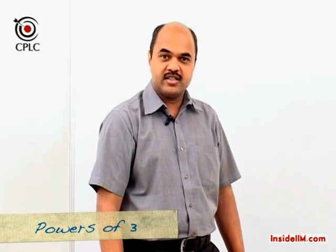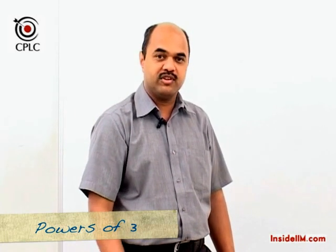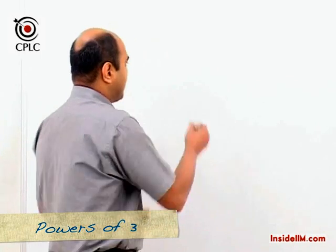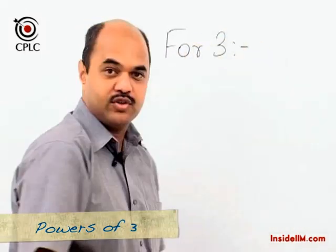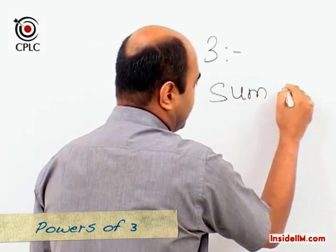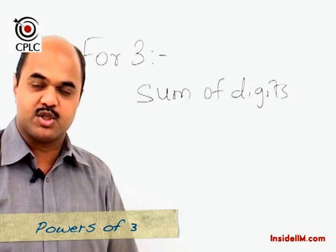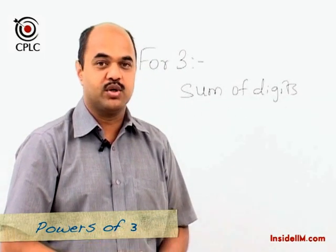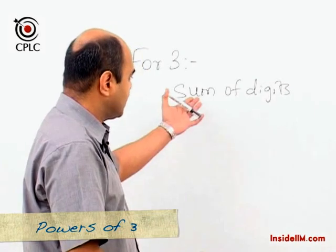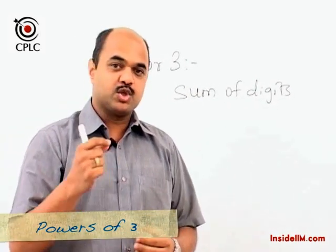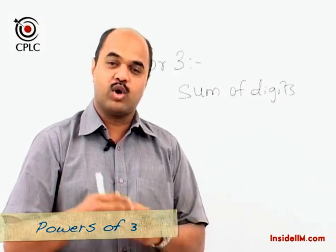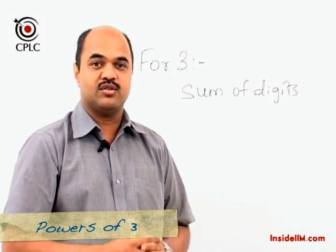We have understood divisibility tests for all numbers which are powers of two — covering two, four, eight, and sixteen. Let's now move on to powers of three. For the divisibility test for three, all we do is add up all the digits of the number. If the sum of the digits is divisible by three, then the overall number is also divisible by three. For the remainder test for three, just divide the sum of the digits by three and check the remainder — that remainder will be the same as when the entire number is divided by three.